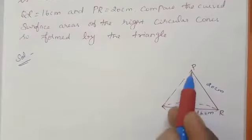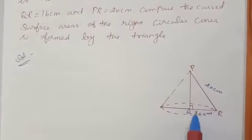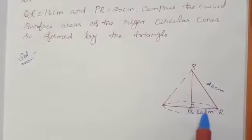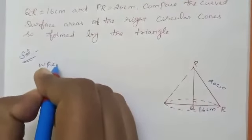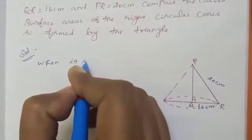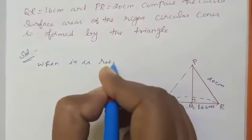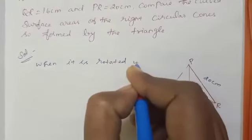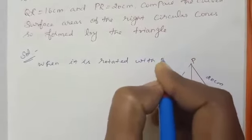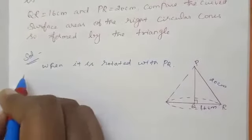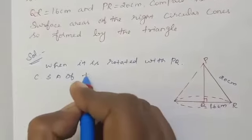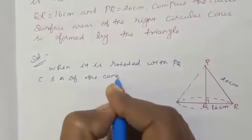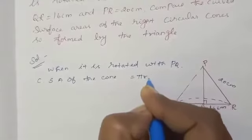First, I am rotating with the PQ. Rotate with the PQ means from the right angled triangle I can get one cone. When it is rotated with the PQ, CSA of the cone is pi R L square unit.